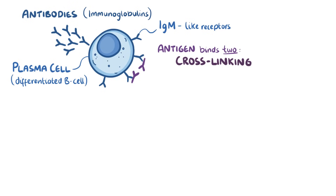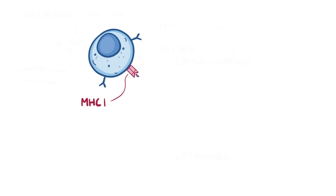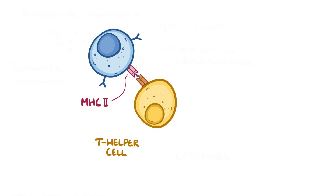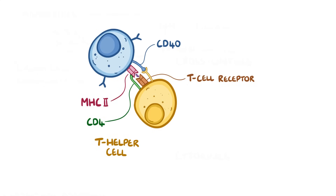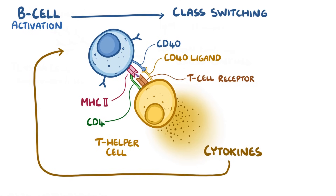Cross-linking triggers the B cell to take in the antigen, break it apart, and present a piece on the surface on a protein called MHC class 2, which stands for major histocompatibility complex, class 2. Nearby T helper cells can then bind to the MHC class 2 protein via their T cell receptor, along with the co-stimulatory molecule CD4. The B cell's CD40 also binds to the T cell's CD40 ligand, and that causes the T cell to release cytokines, which then results in B cell activation and isotype switching — meaning it changes from producing IgM antibodies to producing IgG antibodies instead.